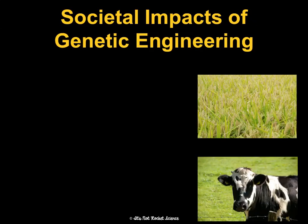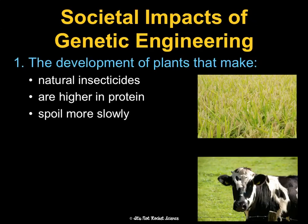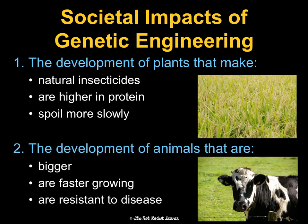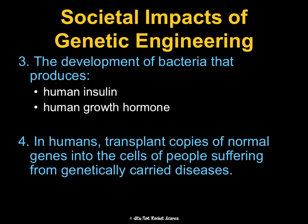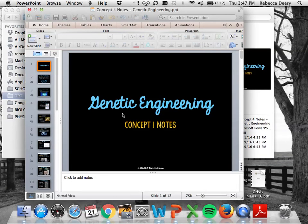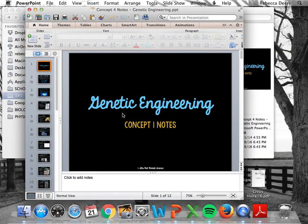There are significant societal impacts of genetic engineering. We've been able to make plants with natural pesticides that are high in protein and spoil more slowly, and animals that are bigger, faster growing, and resistant to disease. We've also developed bacteria to produce human insulin and human growth hormone. Humans can transplant copies of normal genes into the cells of people suffering from genetically carried disease. There are really great positives, but there are also negatives, and it's important to consider both sides.